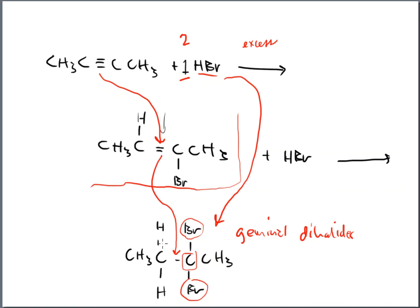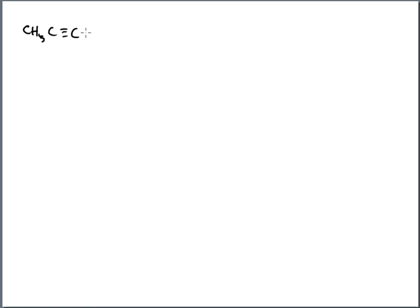Now let's talk about the mechanism, because this is where people have problems. Here's our alkyne reacting with hydrochloric acid. First, I have to recognize that HCl is a polar molecule — Cl is electronegative, so it's partially negative and H is partially positive. This creates an electrophile in the hydrogen. The triple bond is a very negative source — that's my nucleophile.